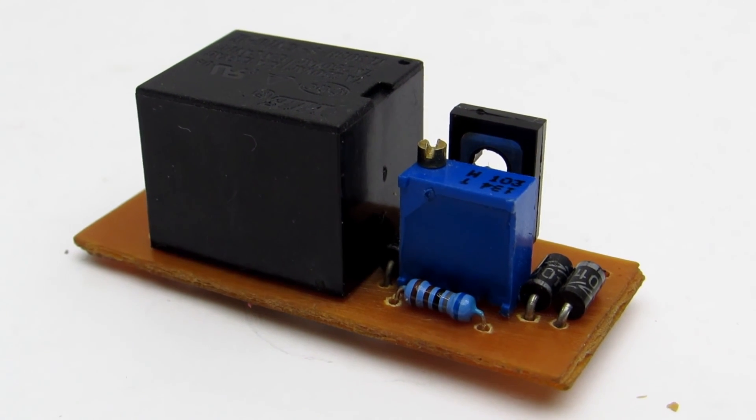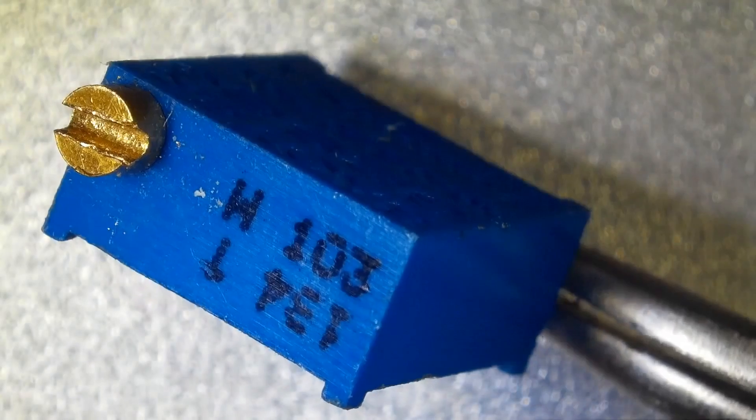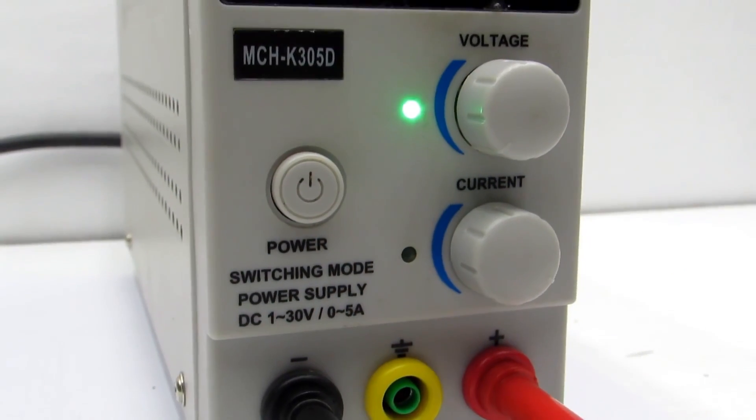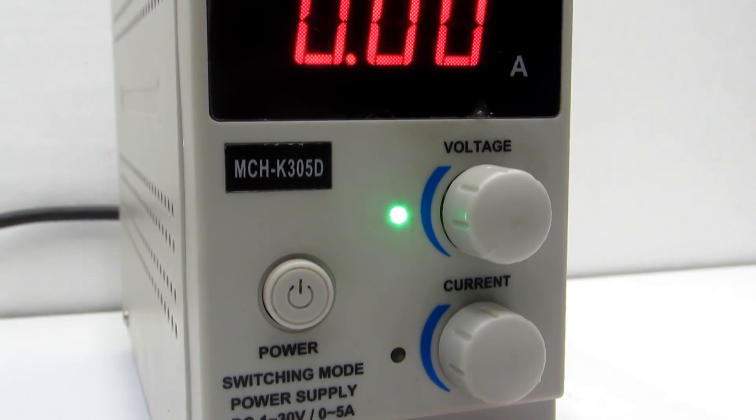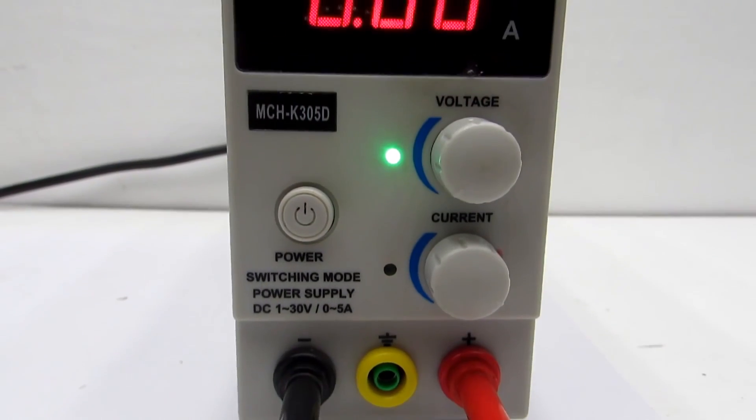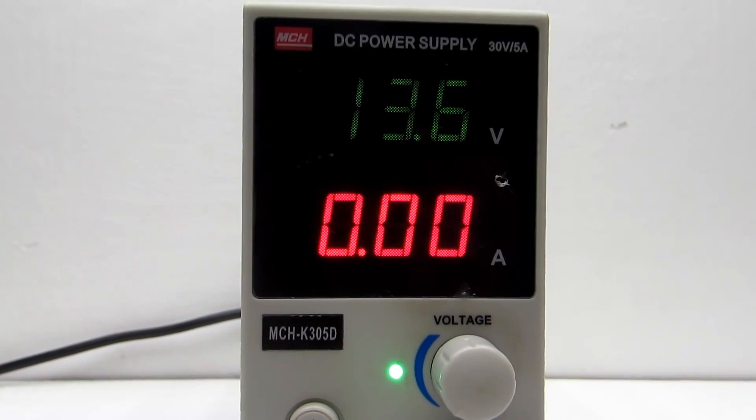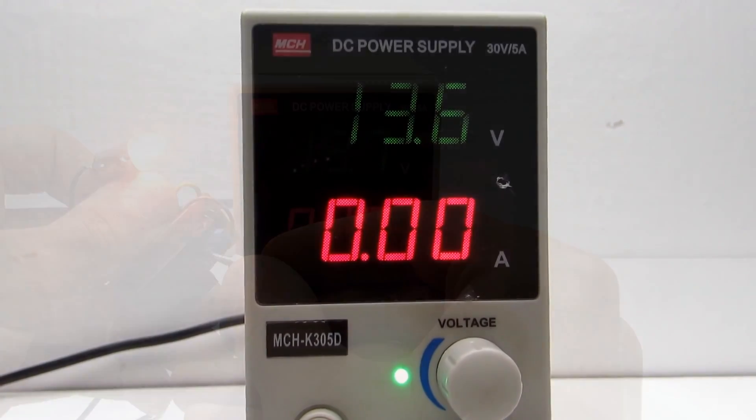Using a variable resistor we can adjust the voltage at which the transistor will activate. To configure the circuit it's convenient to use a regulated power supply. It is necessary to set the voltage at about 13.5 or 13.7 volts, which is equivalent to the fully charged car battery.